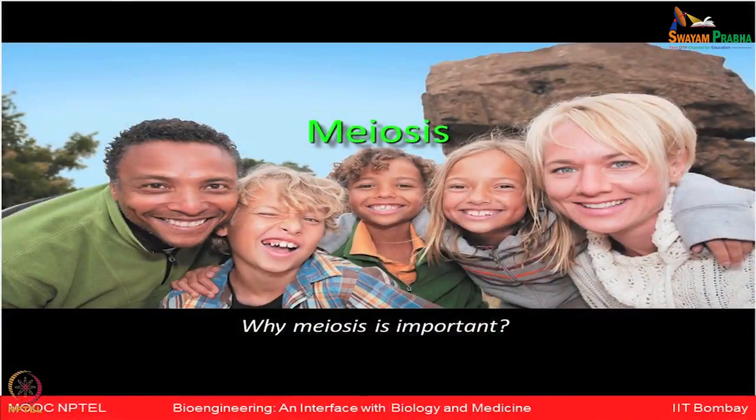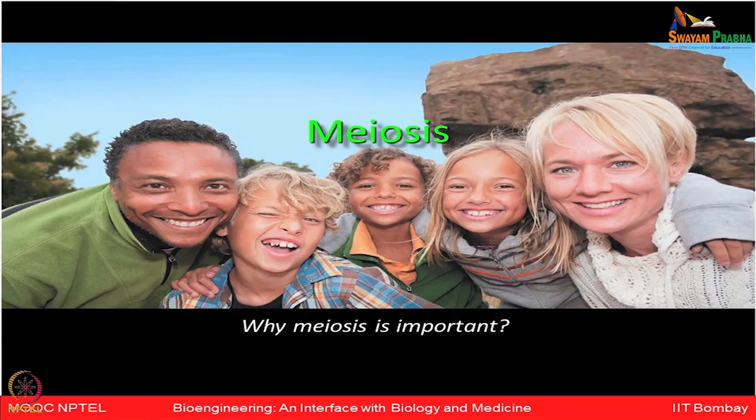Let us move on to meiosis. In meiosis, chromosomes are reduced to half. If this process were purely mechanical, every offspring from the same parents would look exactly the same — so if there are four children in one family from the same father and mother, they would look exactly the same. But there is actually a lot of genetic variation.